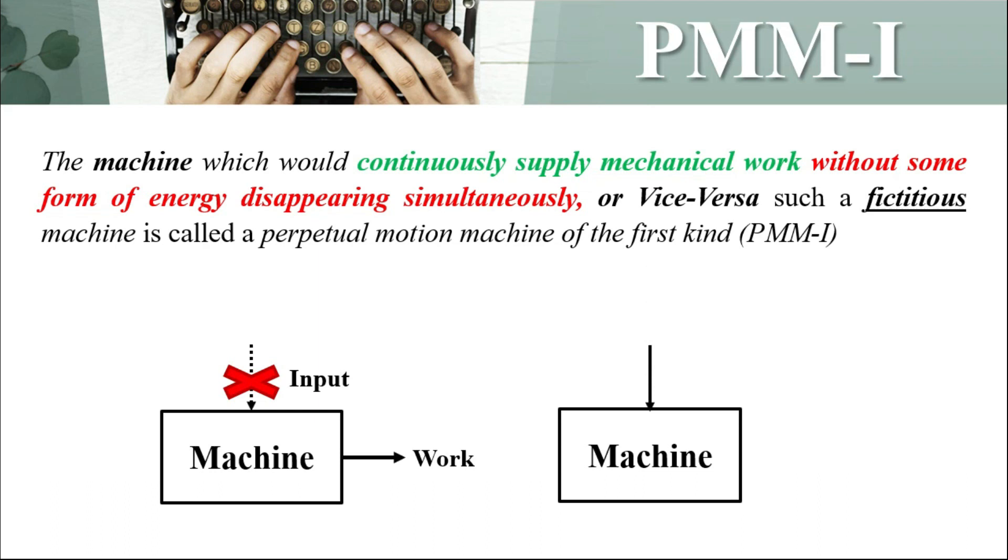Let us say we have a machine and there is a certain amount of input given to it continuously, and the machine does not produce any work. There is no output to such a machine. So both these cases are called perpetual motion machine of first kind.